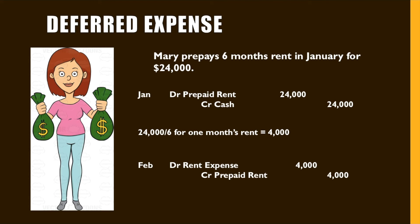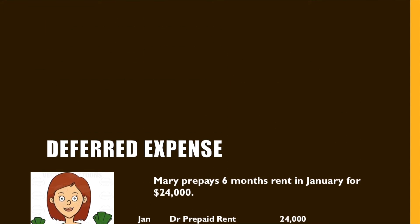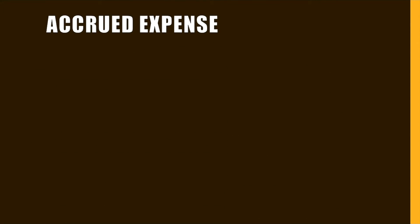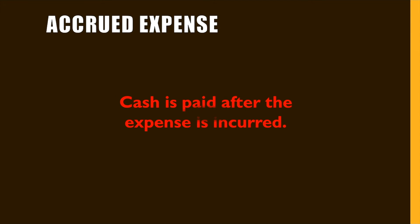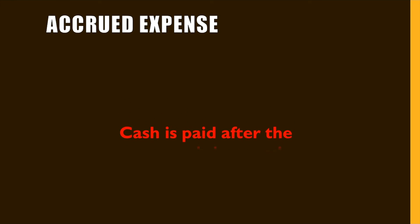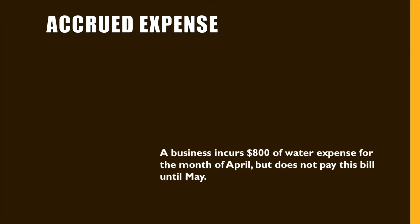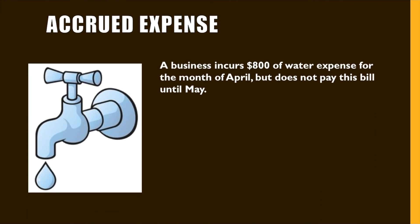The final scenario involves accrued expense, where cash is paid after the expense is incurred. Consider a business that incurs $800 of water expense for the month of April but does not pay this bill until May. The journal entry would record: debit water expense, credit accounts payable. Then, after the bill has been paid, it would debit accounts payable and credit cash.